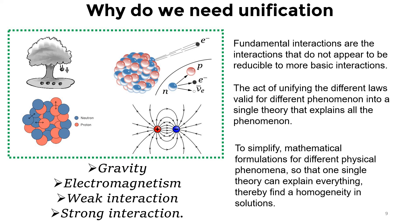So with the progress of civilization we try to unify, and partly we have been successful — we will come to that later. Quantum field theory is a theory, an endeavour towards finding a unified theory. The reason we need unification is that we want to simplify things and get into a single theory, avoiding heterogeneity and finding homogeneity in solutions.